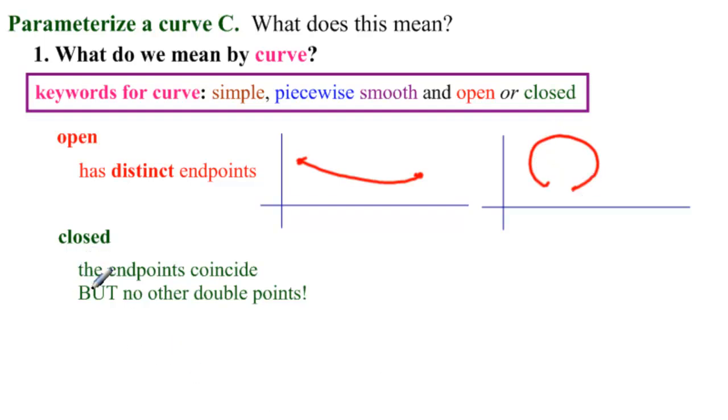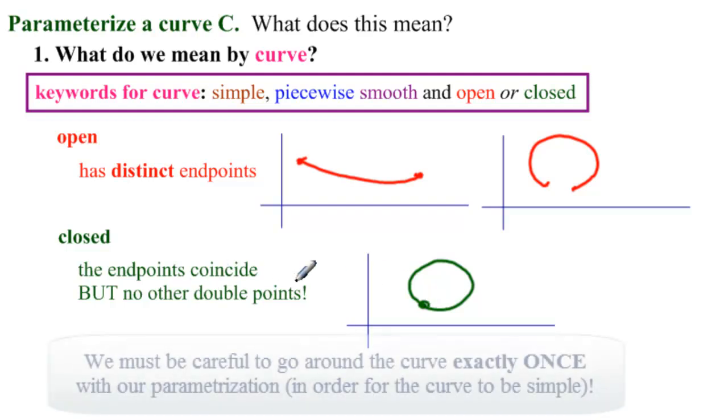If it's closed, the endpoints coincide, but you're not allowed to have any other double points. So a circle is a closed curve. The endpoints coincide, but we have to make sure that we only go around it exactly once in order that it is a closed simple curve.